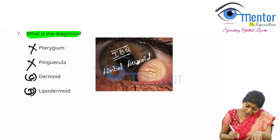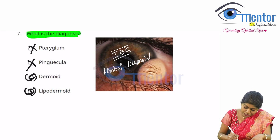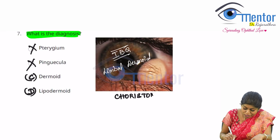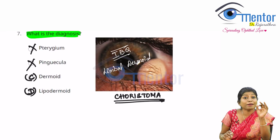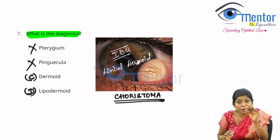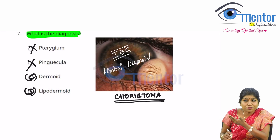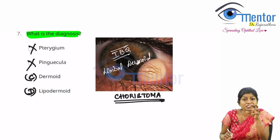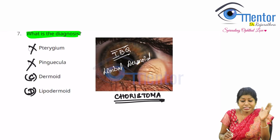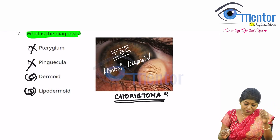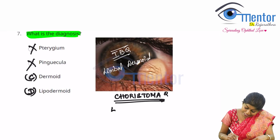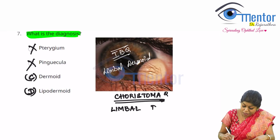This is a dermoid. Dermoid is a choristoma. What is a choristoma? When you have an abnormal structure in a place where it is not supposed to be. Can you have hair there? No, you are not supposed to have hair there. So this is definitely a choristoma, and this is definitely a limbal dermoid.